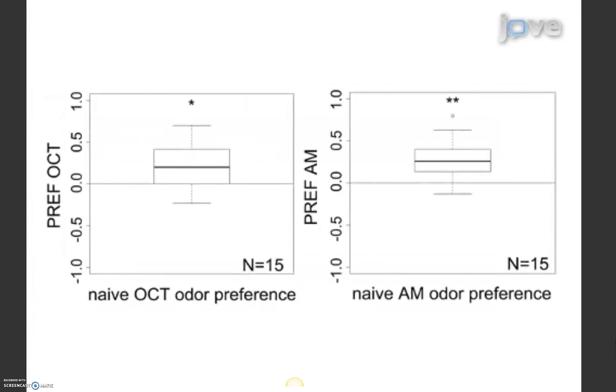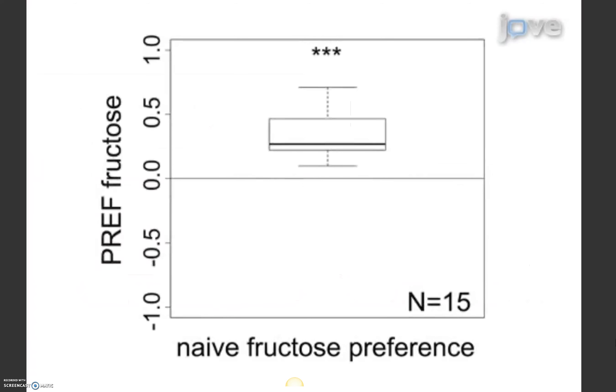The animals recognized both stimuli as attractants and showed a naive preference for fructose agarose over plain agarose.